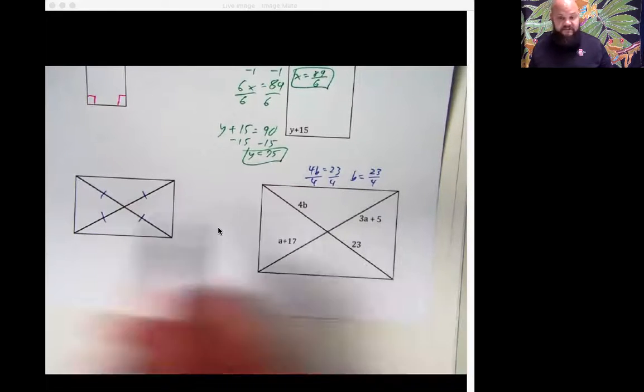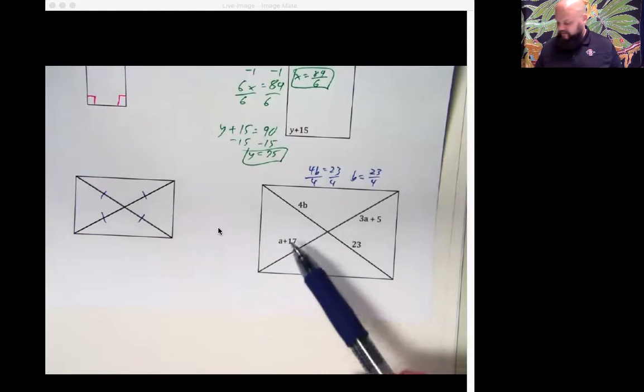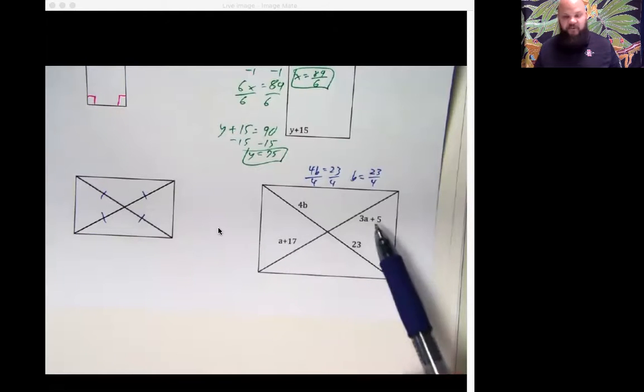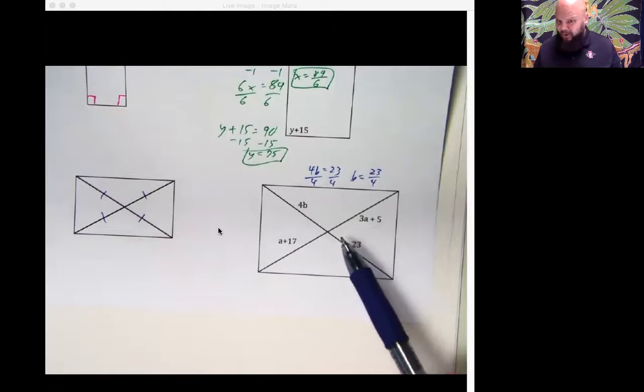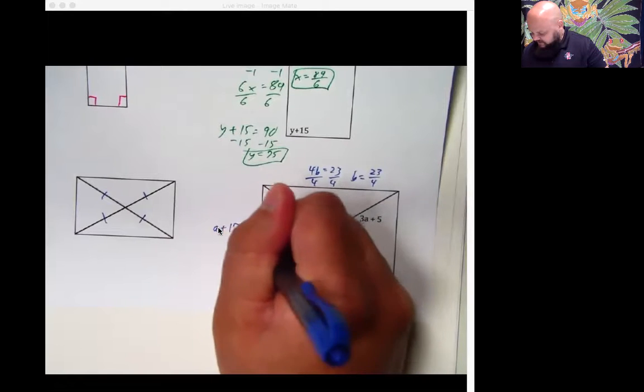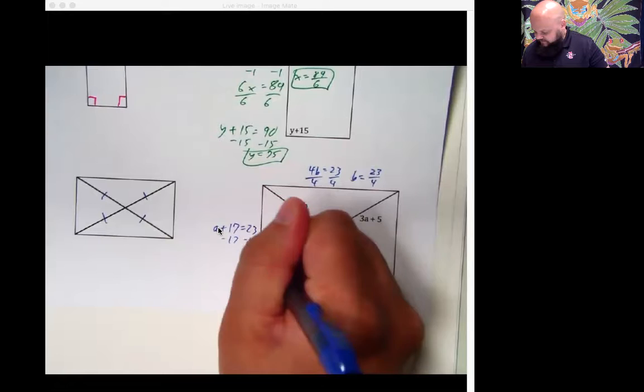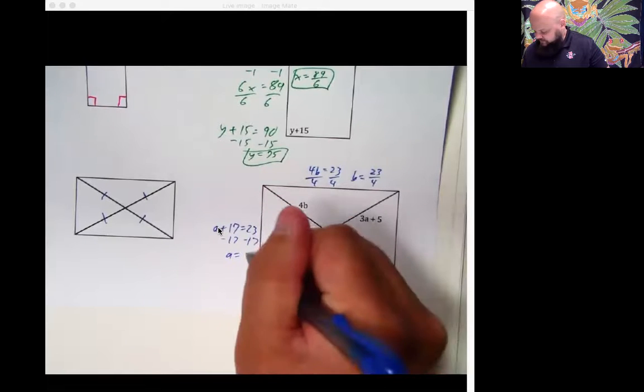But what about these two guys? Well, they should be exactly the same thing. So we can set them equal to each other. We could say A plus 17 has to equal 3A plus 5. Or we could just say that they're going to equal 23 because they all have to be the same in a rectangle. So I'm going to do it the easy way. A plus 17 is equal to 23. You minus 17 from both sides. You get A is equal to 6.